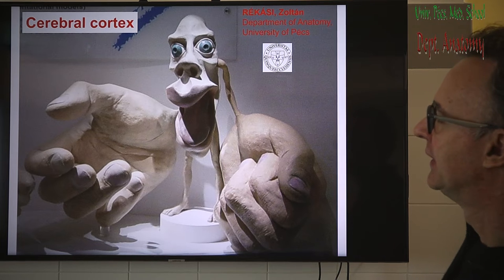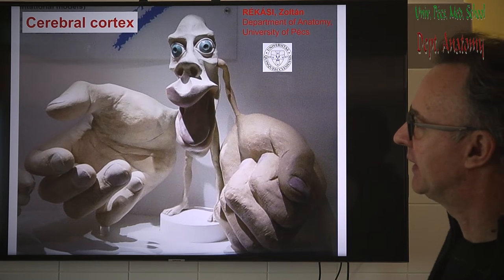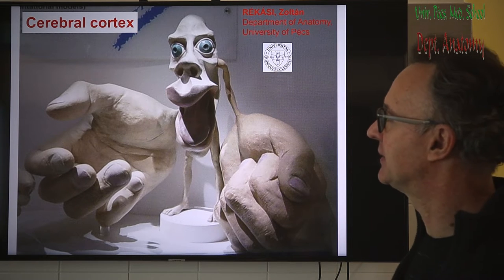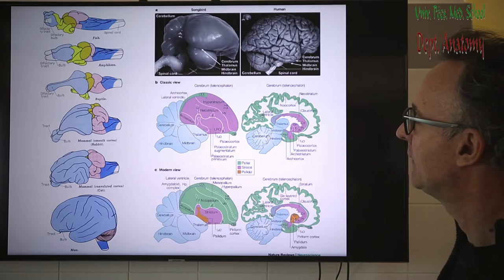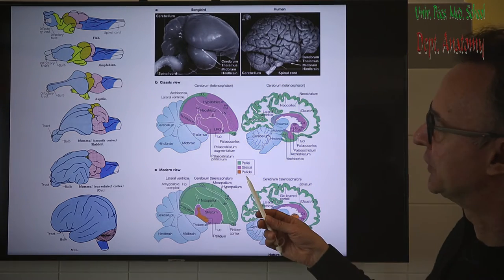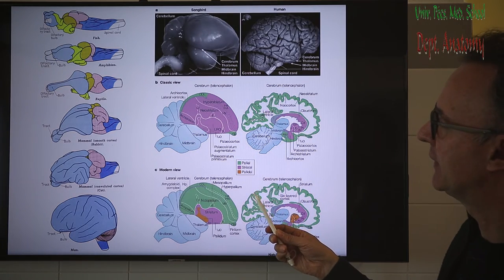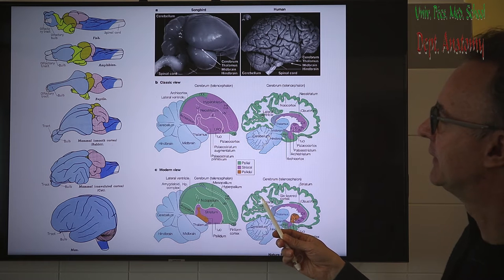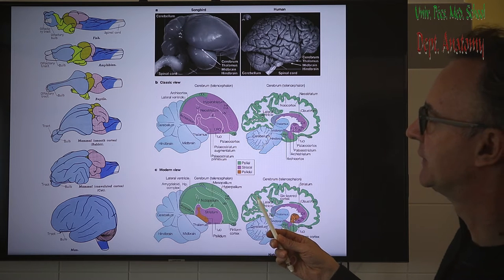Dear students, in this lecture we reached the highest center in the brain, the cerebral cortex. During evolution, the different brain vesicles have variable proportions.